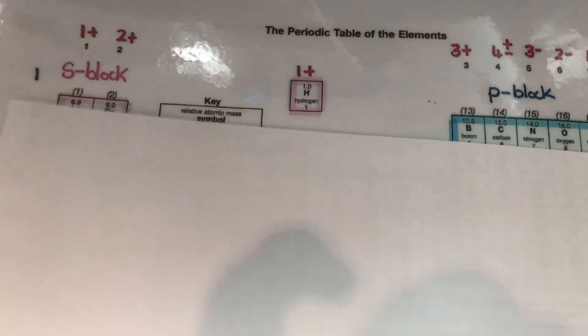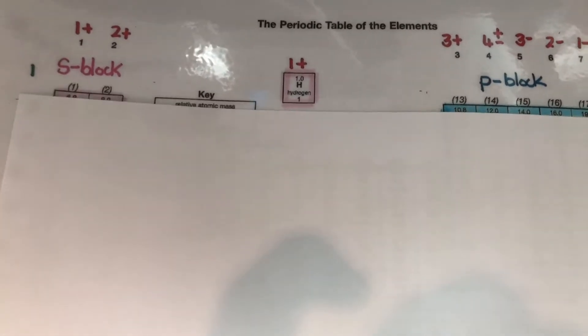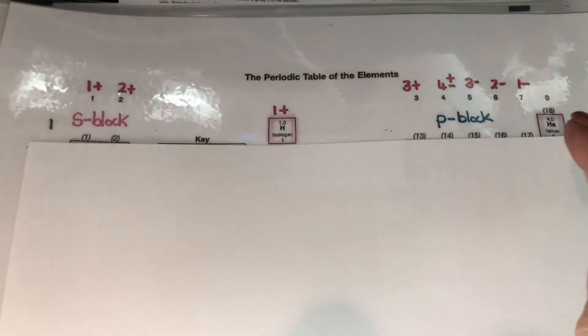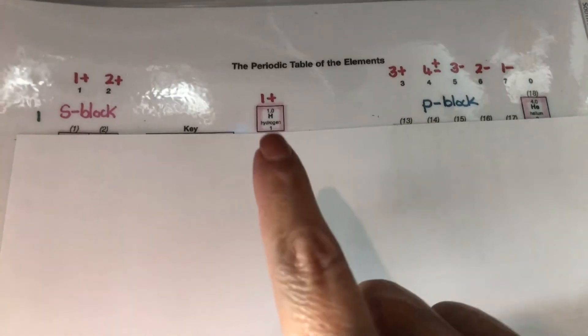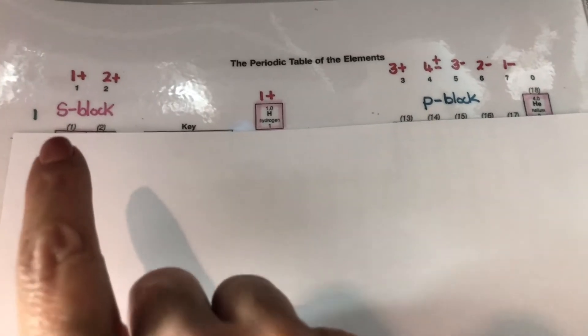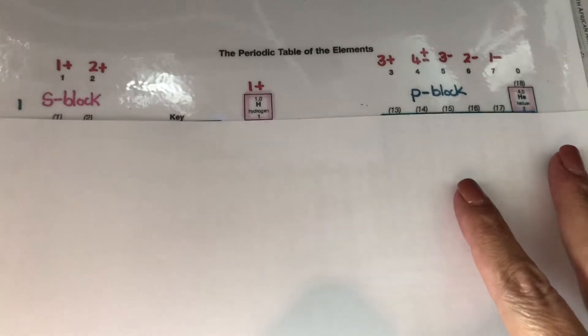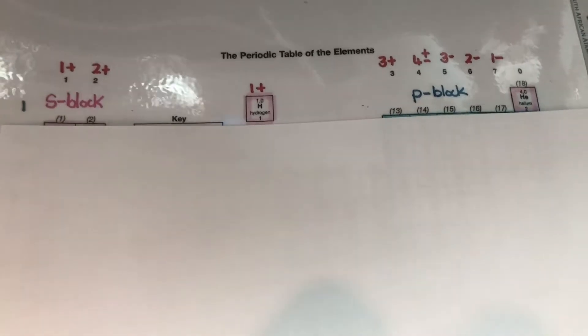All right so we start at the beginning of the periodic table when we want to determine the SP notation. So the first energy level or the first period only has two S blocks, one is for hydrogen which actually belongs here in group one and one is for helium so they both fall in the S block.